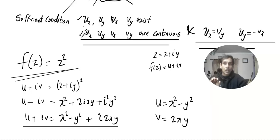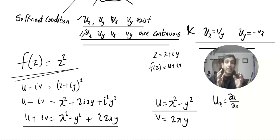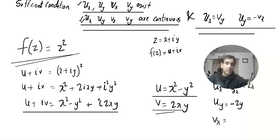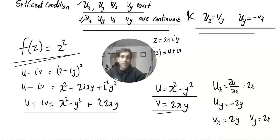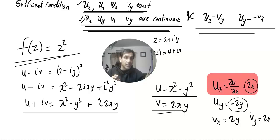Now we calculate the partial derivatives. u_x = 2x, u_y = −2y. v_x = 2y, v_y = 2x. All the partial derivatives are polynomials, and polynomials are continuous, so the derivatives are continuous. We can see that u_x = v_y (both equal 2x) and u_y = −v_x (both equal −2y). The Cauchy-Riemann equations are satisfied.